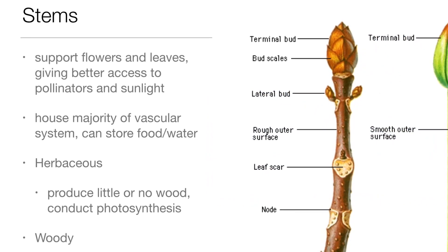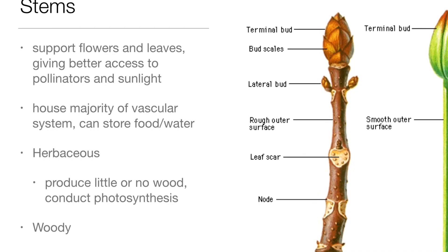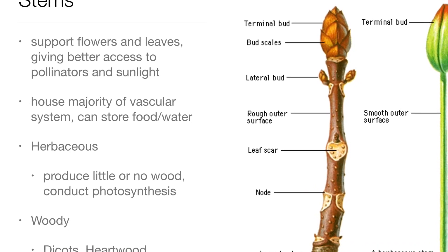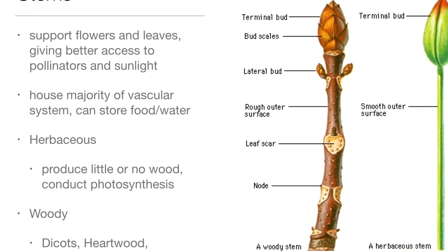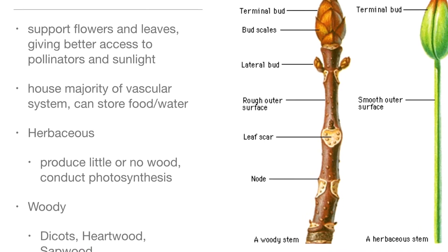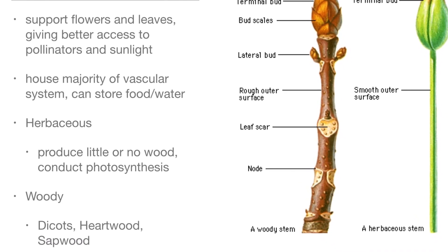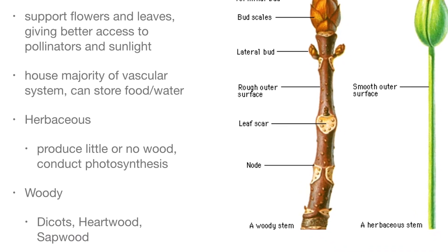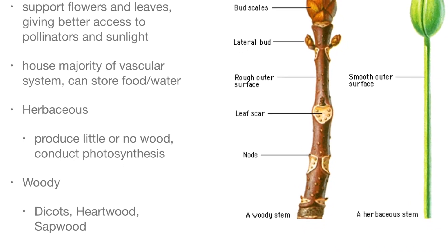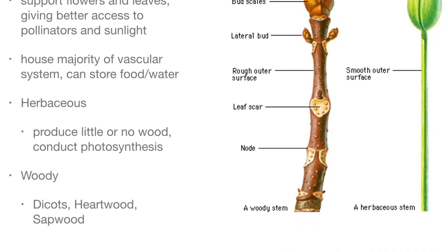Stems support flowers and leaves, giving better access to pollinators and sunlight. They house the majority of the vascular system and can store food and water. Herbaceous stems produce little or no wood and conduct photosynthesis. Woody stems contain hardwood and sapwood.